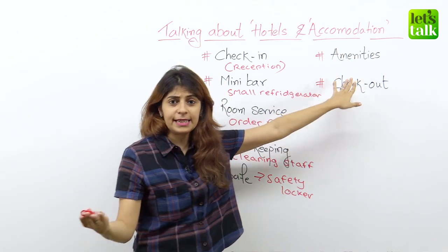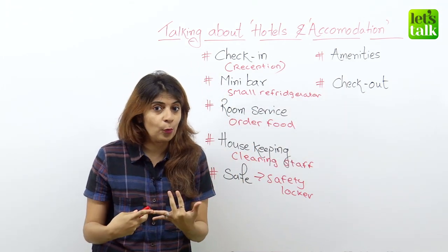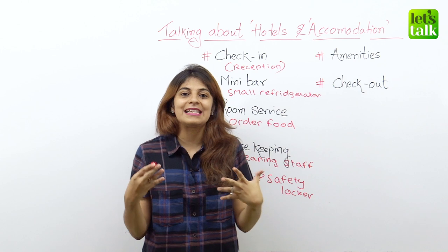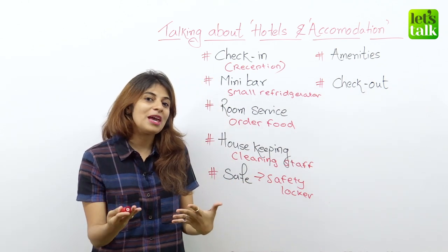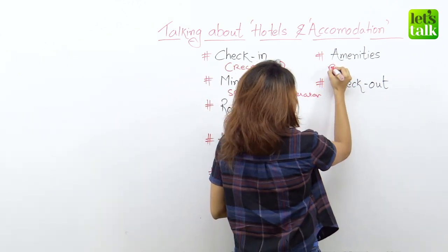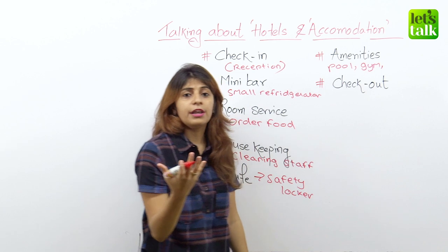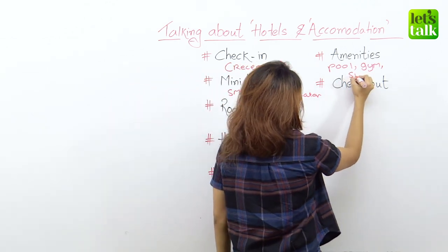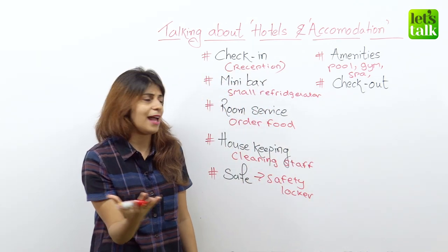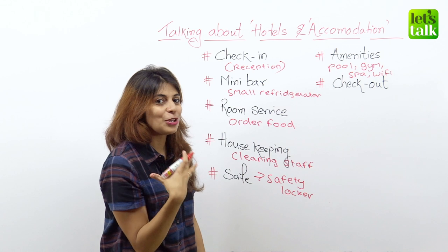Then we have different amenities. Different amenities include a spa, a swimming pool, or laundry service. These are the different amenities that hotels provide. Usually when you make a reservation online, these amenities are listed — like whether the hotel has a pool, a gym, a spa, or various other things, even internet access which is Wi-Fi. So these are the different amenities that you can look for and talk about.